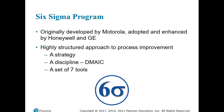Motorola developed Six Sigma in the 1980s in response to customer complaints and stiff competition. The company first set a goal of reducing defects by 90 percent and achieved impressive results through benchmarking competitors, soliciting new ideas from employees, changing reward plans, adding training, and revamping critical processes — documenting the procedures into what is now called Six Sigma. Although rooted in manufacturing, GE later expanded Six Sigma into services including human resources, sales, customer service, and financial credit services.